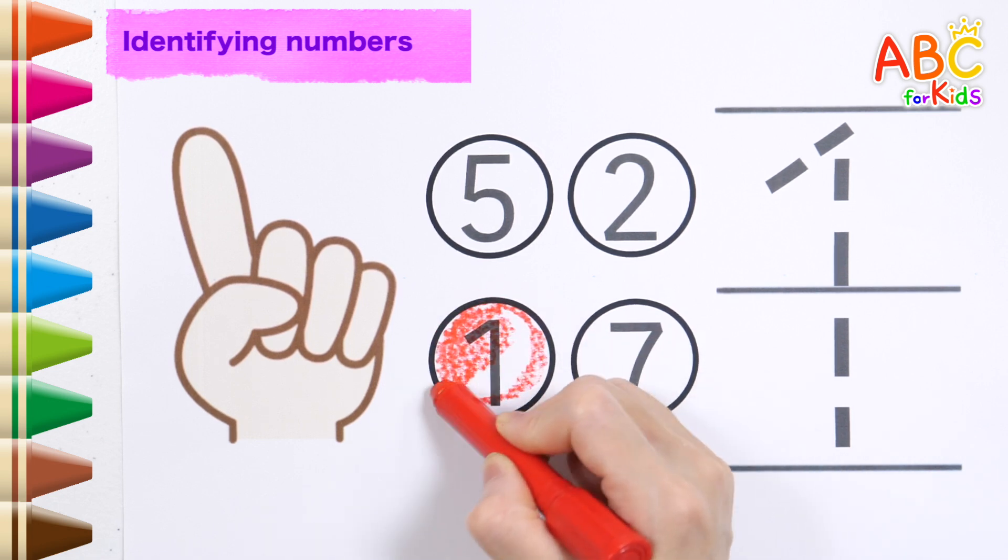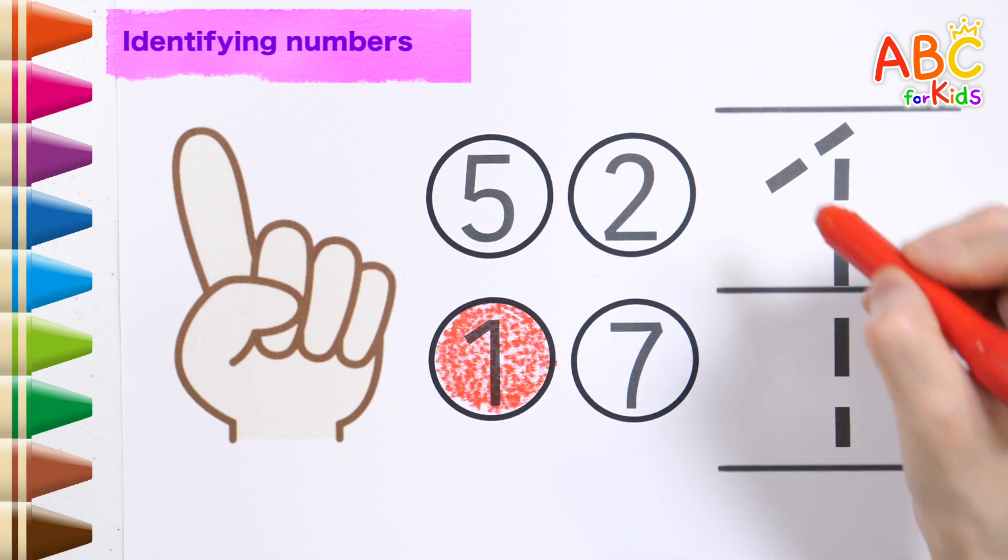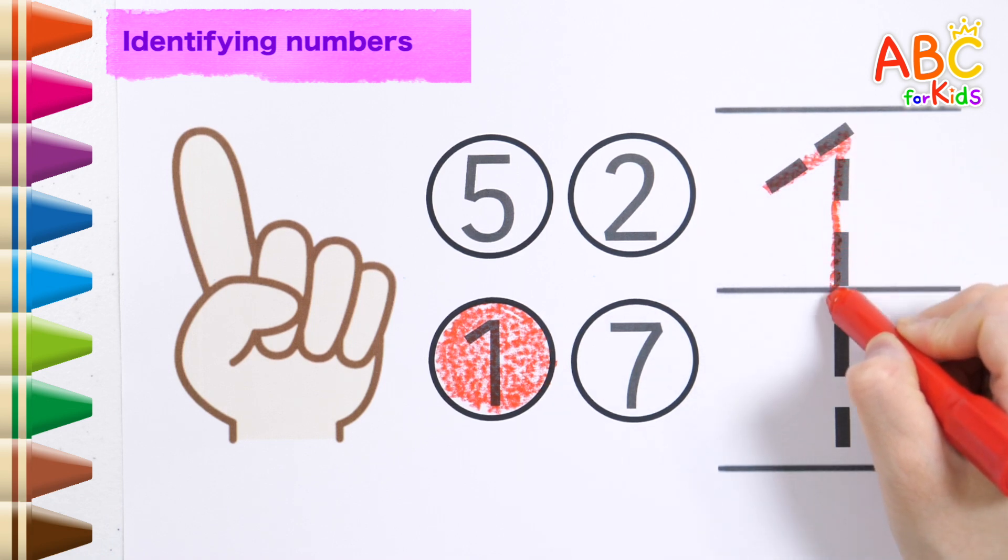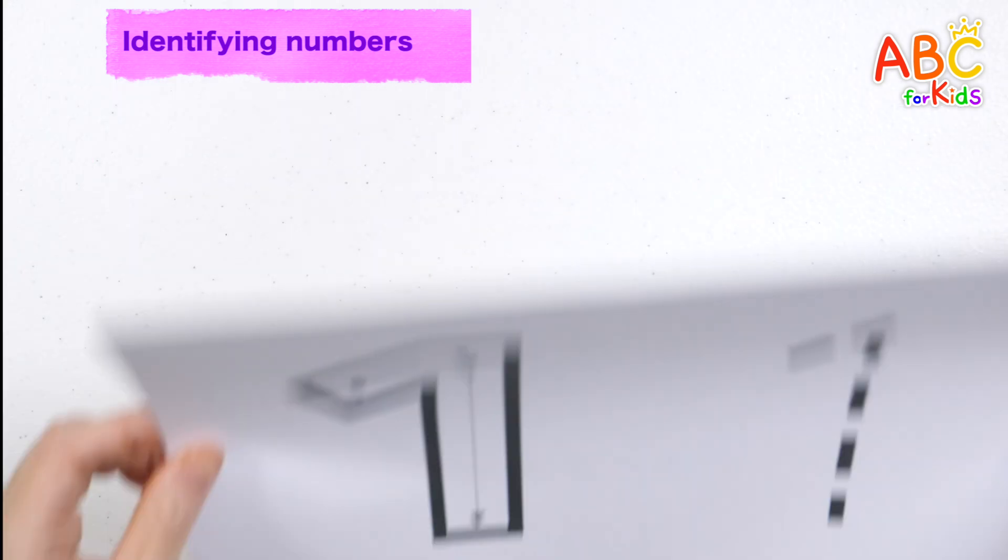Write the number along the dotted line. T, U, V, W, X, Y, and Z. Now I know my ABCs, next time won't you sing with me?